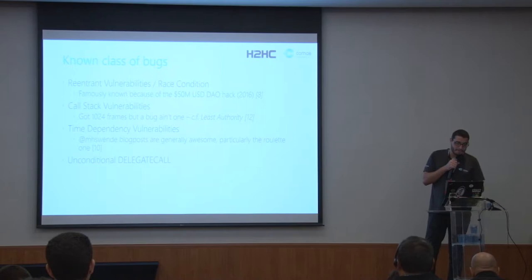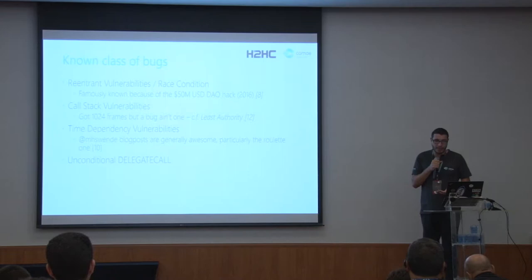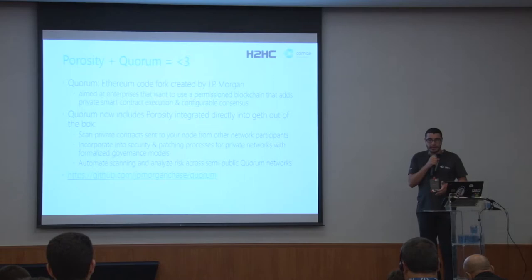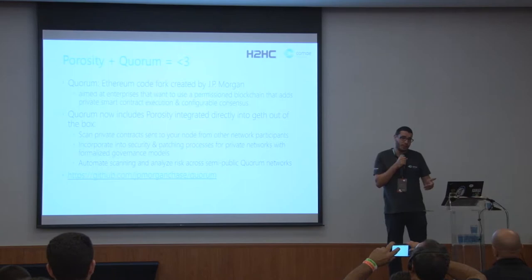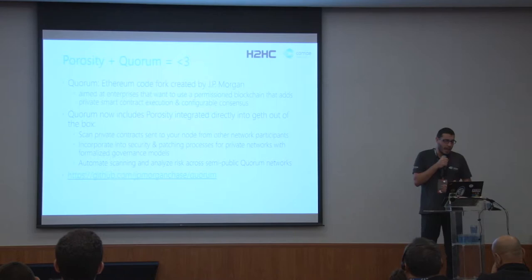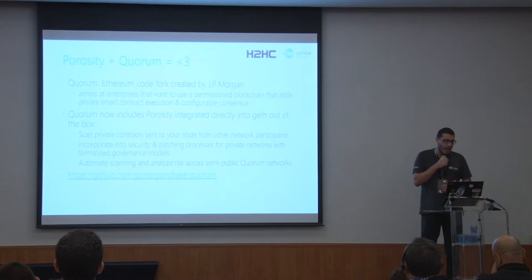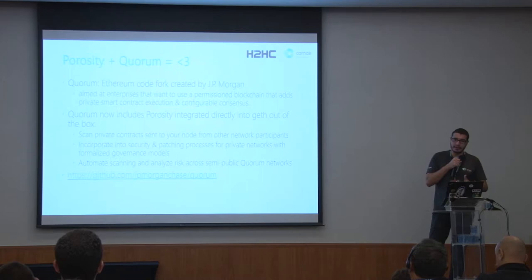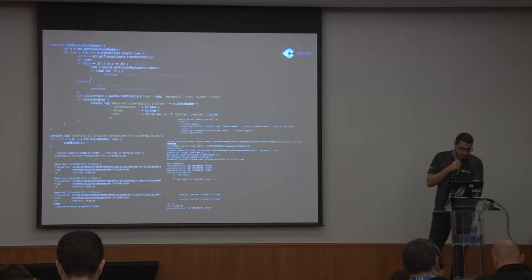Because everything on the Ethereum network is public, you won't see any enterprise using Ethereum because of the lack of privacy — there is no privacy layer. So JP Morgan did a fork called Quorum, which introduces a privacy layer. Recently, Quorum decided to integrate Porosity in the actual bundle to make sure all contracts on the network are going to be tested. Quorum itself is open source, so it's worth looking at.